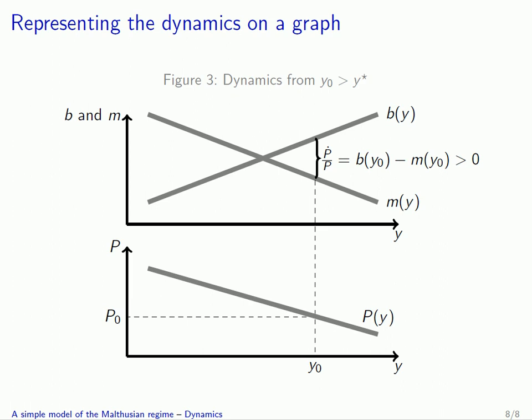As population grows starting from this high income situation, the economy will start housing more and more people, who become less and less efficient in terms of production, as the lower part of the graph shows. Indeed, the amount of goods produced per inhabitant decreases as population increases, and so we converge back to the steady state y*. As we approach y*, the growth rate of population ṗ/p slows down and ends up being equal to zero once we finally reach the steady state.